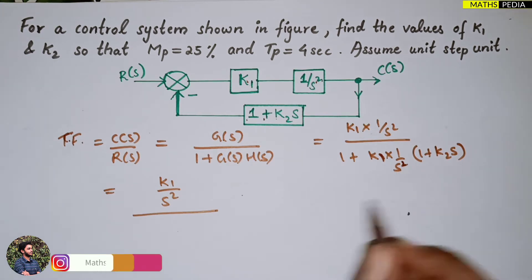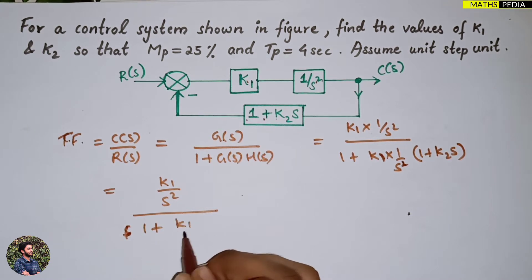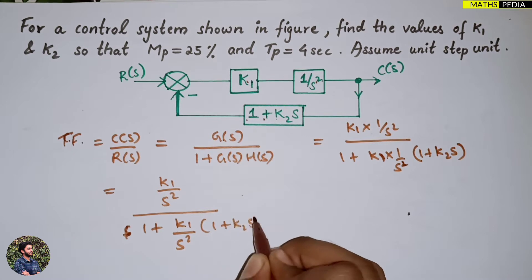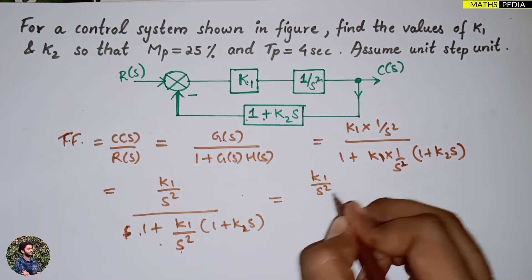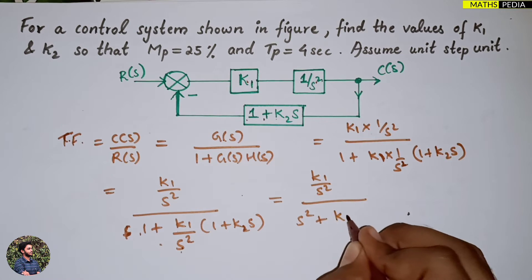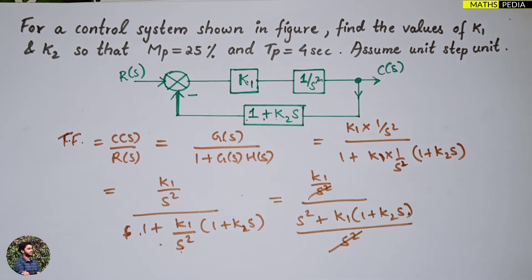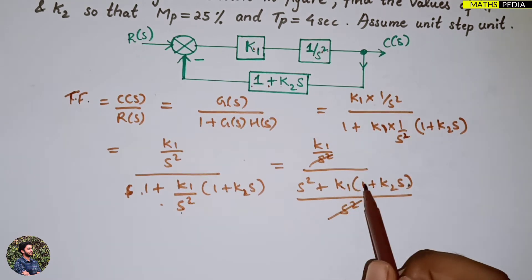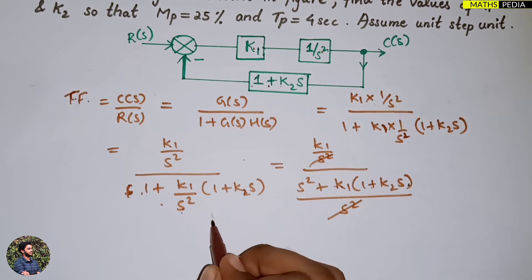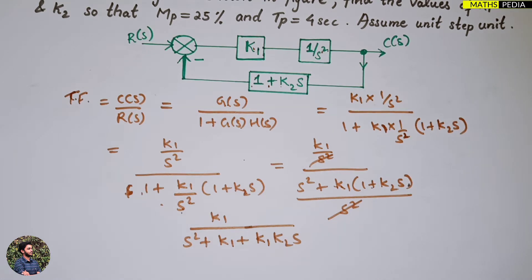Simplifying, we take the LCM. The denominator becomes s² plus k1·(1 + k2·s), all divided by s². The s² terms cancel, giving the transfer function as k1 divided by s² plus k1 plus k1·k2·s.